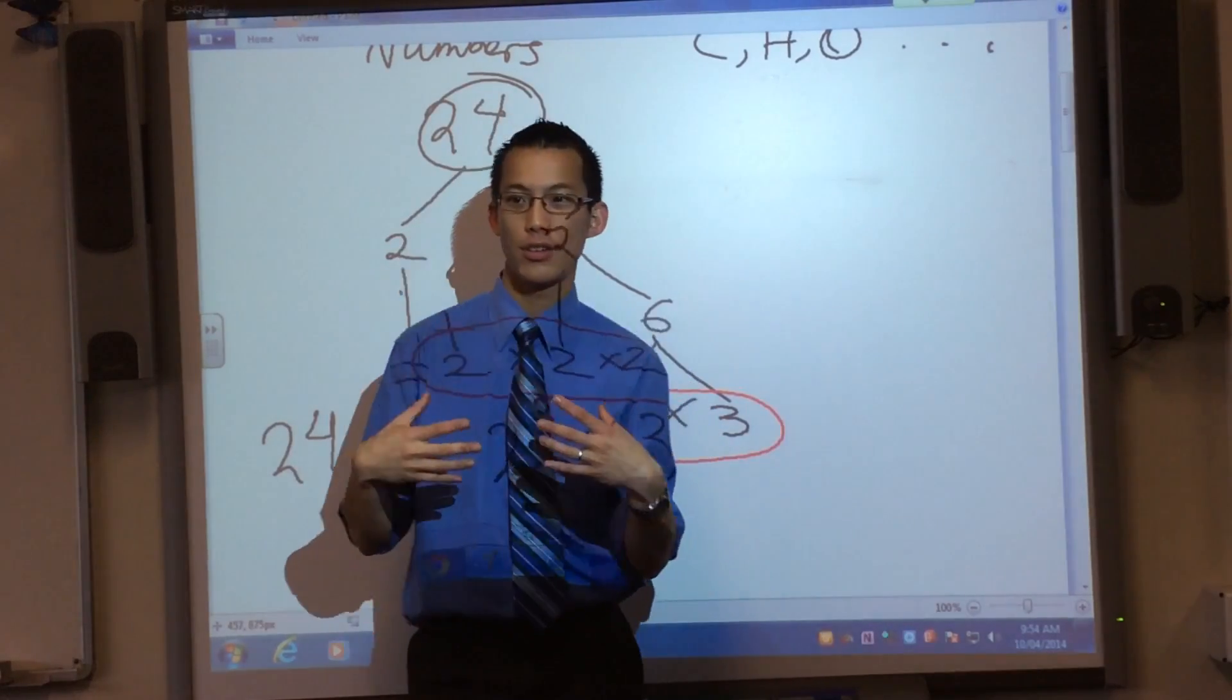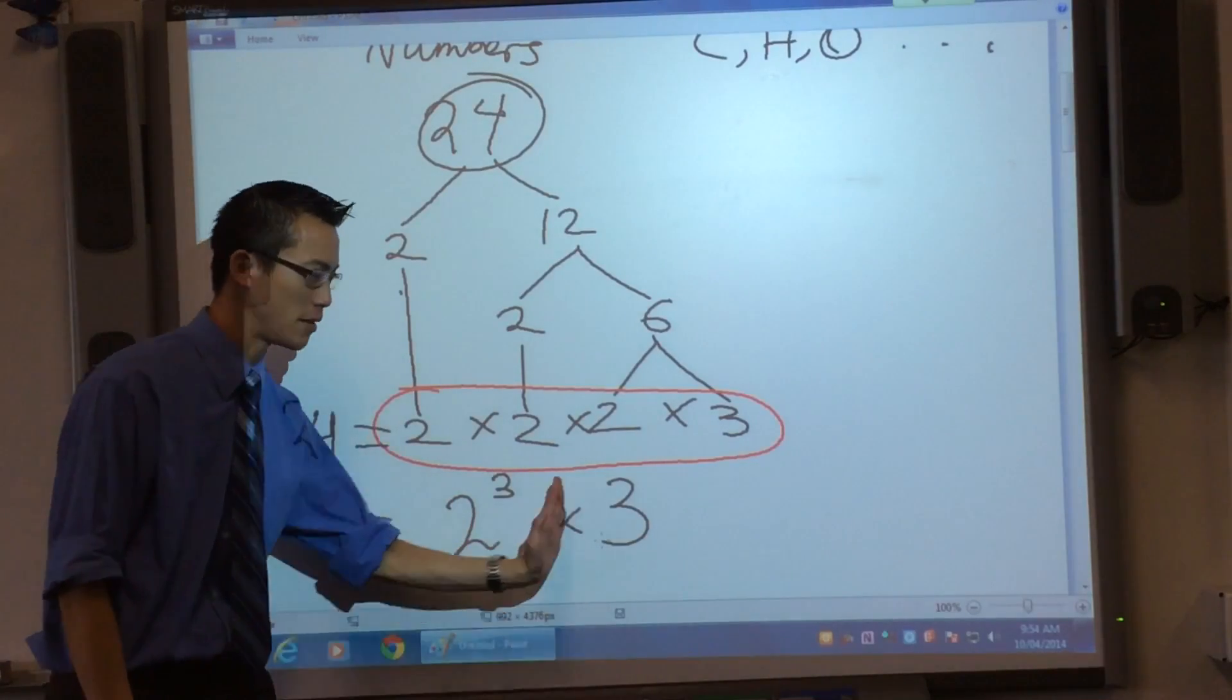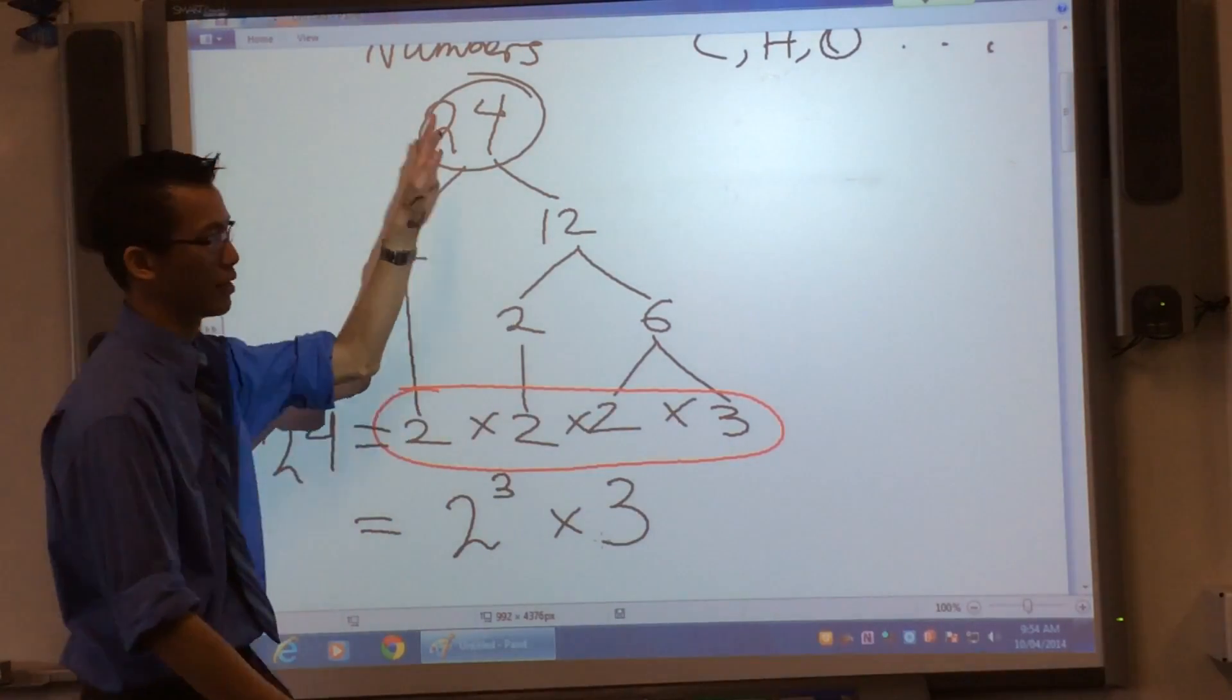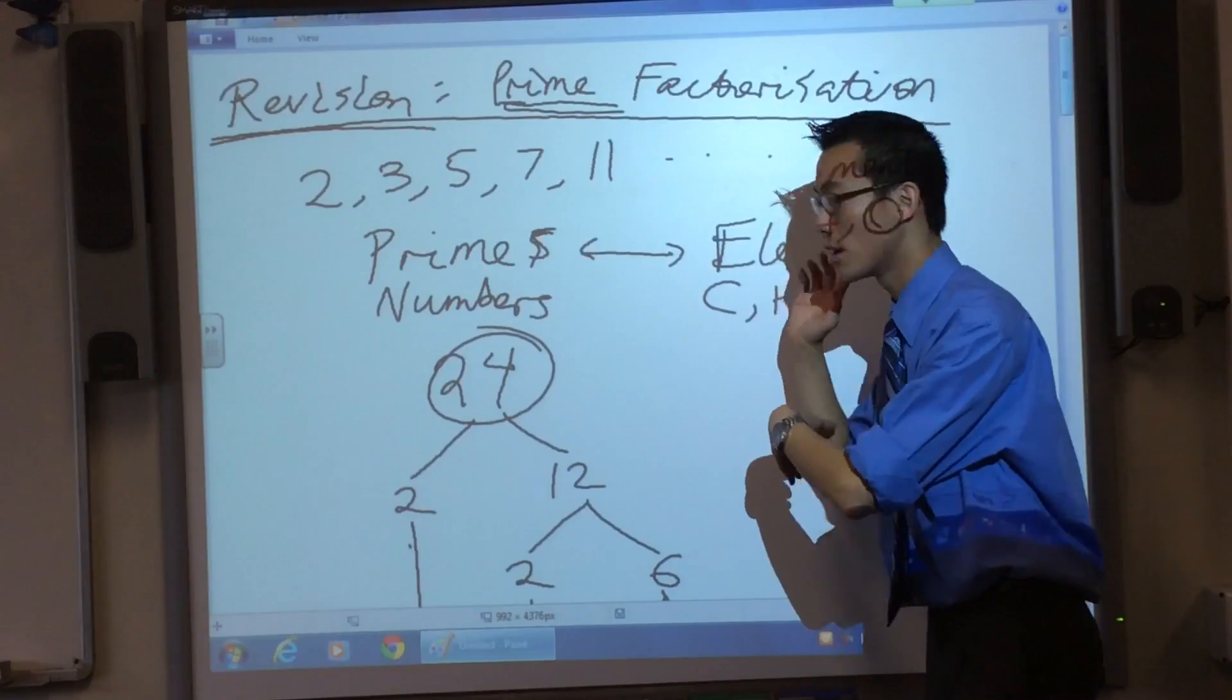There you go. And we do tend to, I mean we don't have to, because multiplication you can change the order around and that's fine. But we do like to put them in the order of the size of the primes. So small primes first, big primes later.